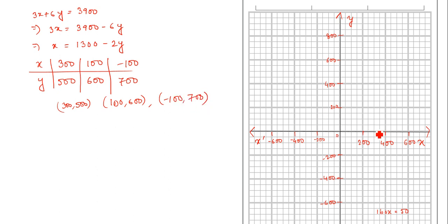and minus 100 and 700. So first point is 300 and 500, that is 300, 500. Next, 100 and upwards it will be 600. So this point is 100 and 600.